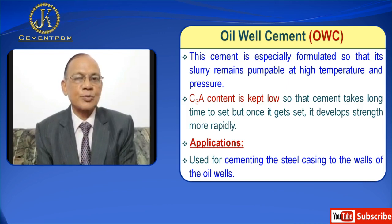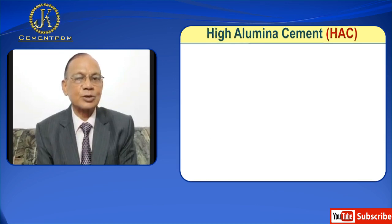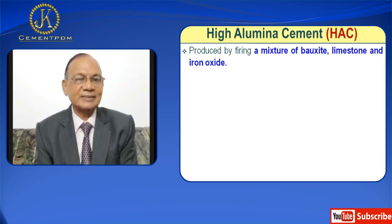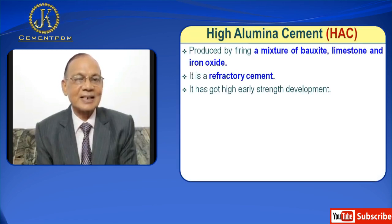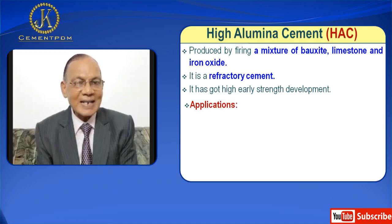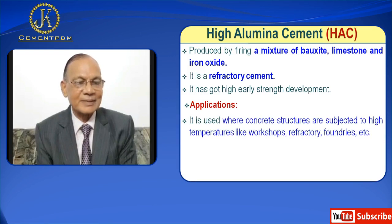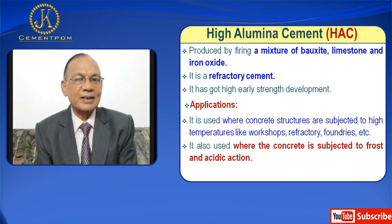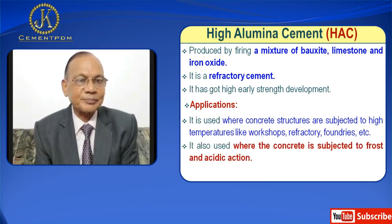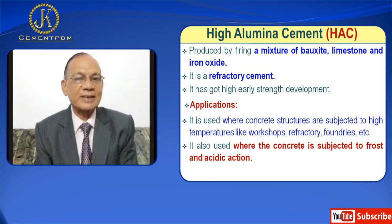Next is High Alumina Cement, HAC. It is produced by firing a mixture of bauxite, limestone, and iron oxide. It is basically a refractory cement and has high early strength development. Application: used where concrete structures are subjected to high temperatures like workshops, refractory linings, foundries, etc. It is also used where concrete is subjected to frost and acidic action.